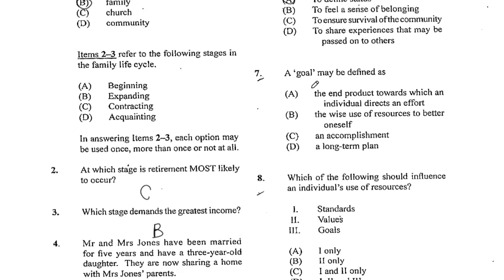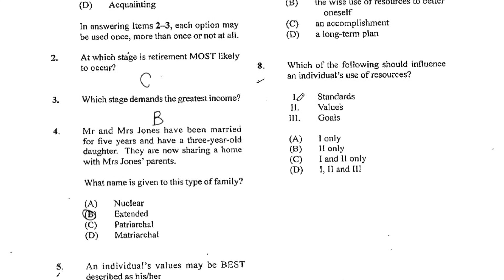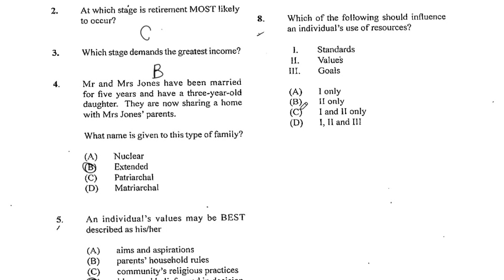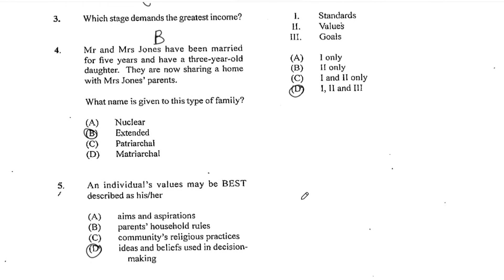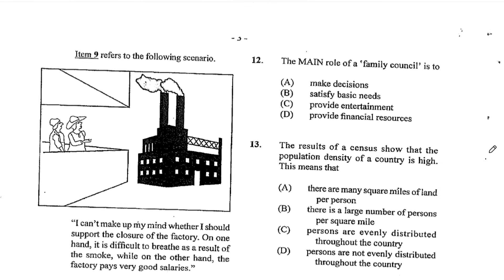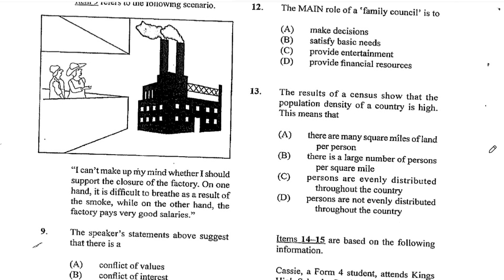Number 7. A goal may be defined as A, the end product towards which an individual directs an effort. And that will help in determining the decisions that are made and will automatically influence how resources are used in order to achieve these goals.